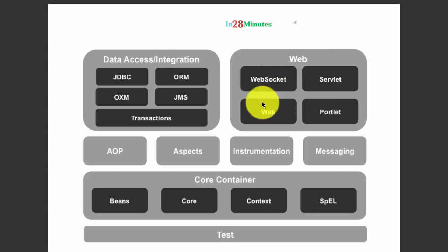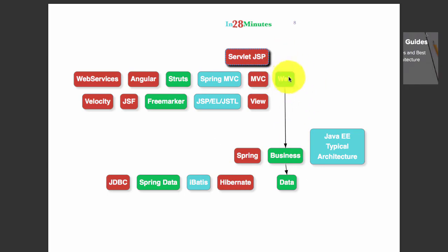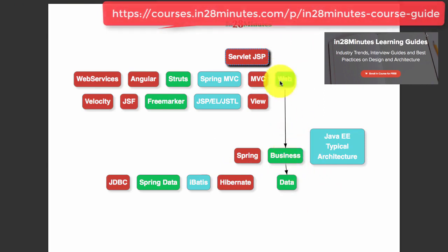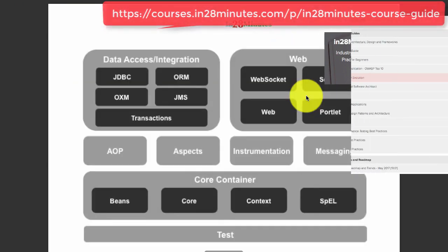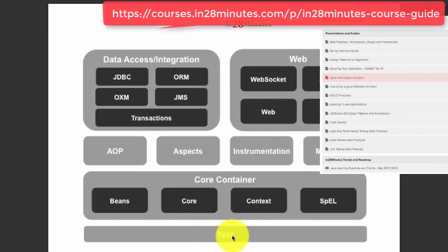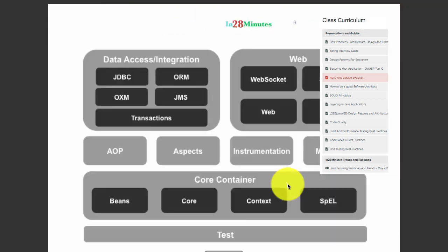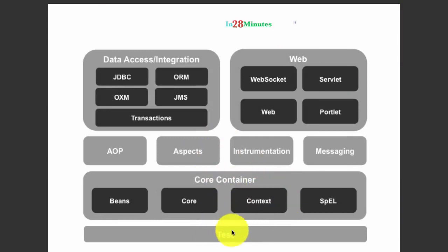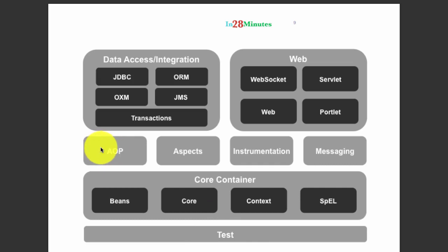We covered the data access layer and the web layer. The focus now shifts to cross-cutting concerns. When you talk about applications, they have multiple layers — web, business, and data. There are things applicable to more than one layer, and those are called cross-cutting concerns. One example is unit testing — you'd want to unit test things in the web layer, the business layer, and the data layer. Spring has good support for unit testing through the Spring test framework. Spring also enables implementation of things like security and logging through aspect-oriented programming. Spring has a module called Spring AOP for basic AOP, and if you want advanced AOP with a framework like AspectJ, Spring provides really good integration with that as well.